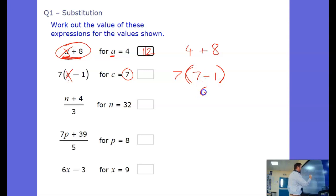7 minus 1 is 6, then 7 multiplied by 6 is 42. The number next to the brackets we're multiplying.